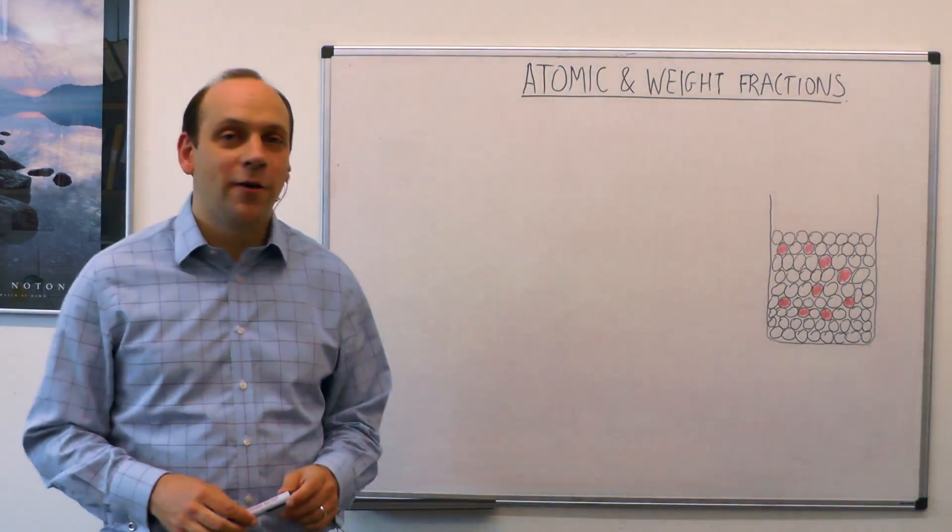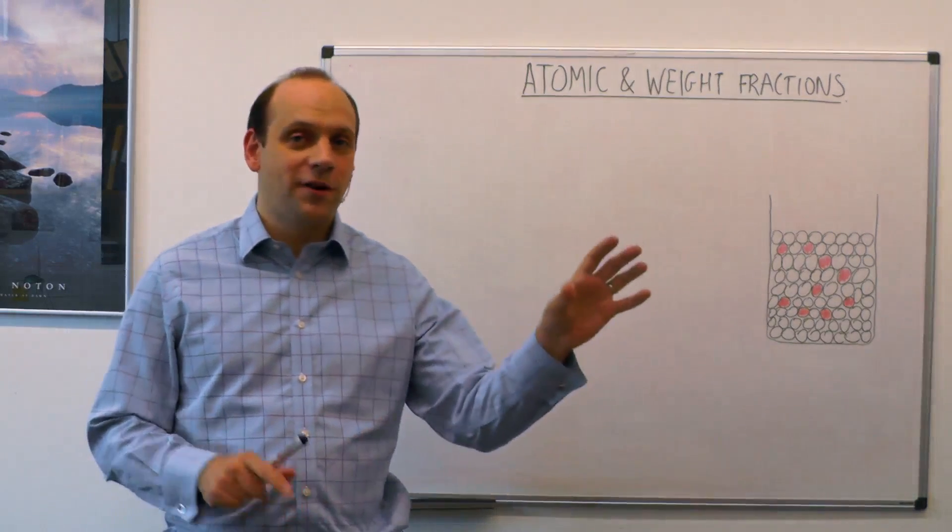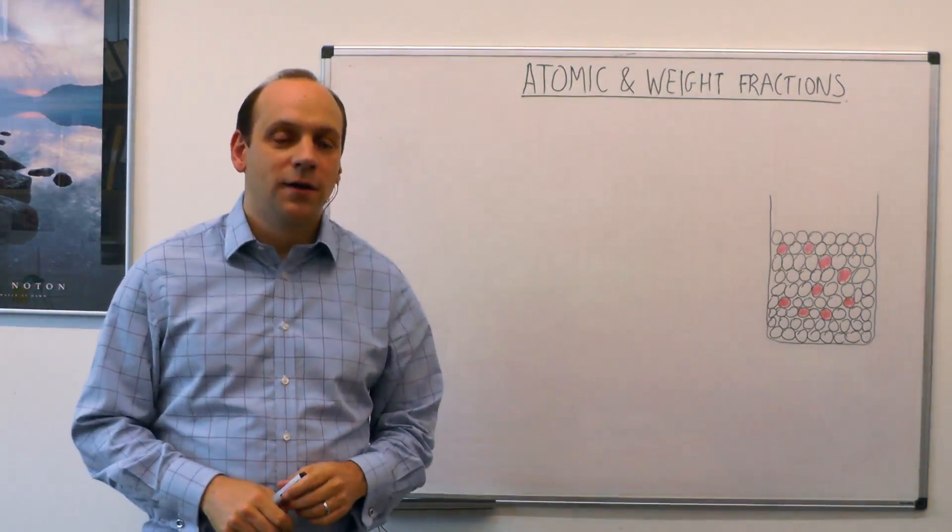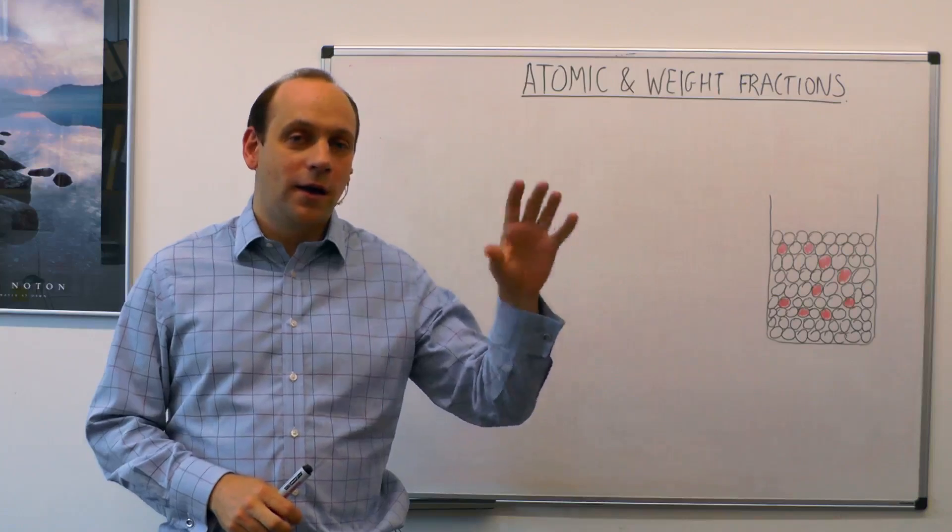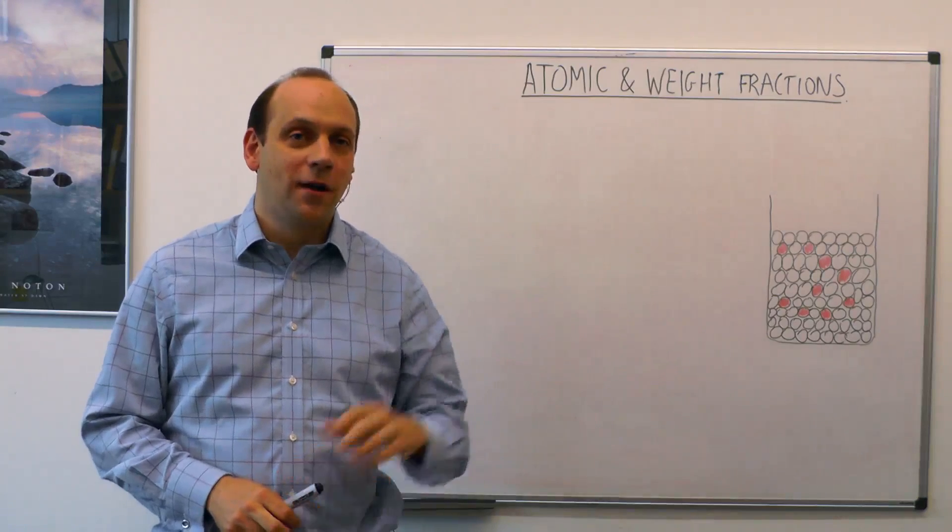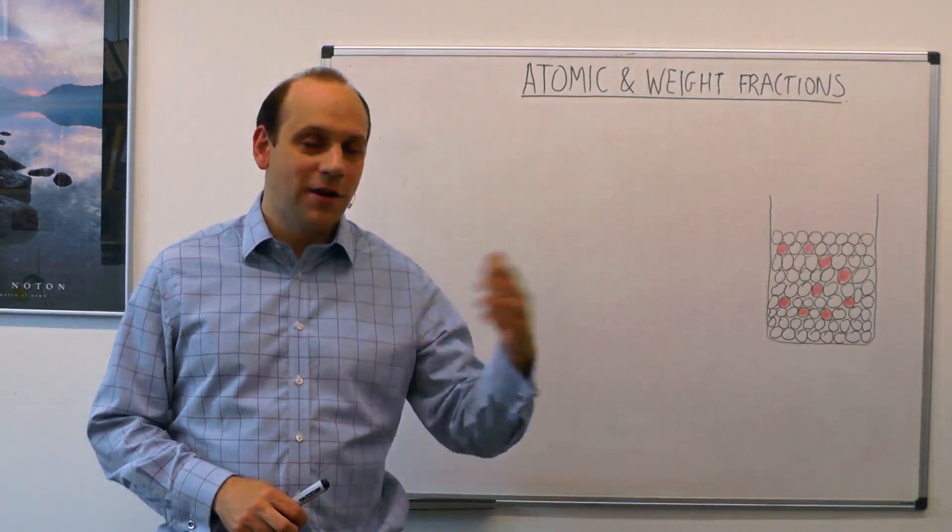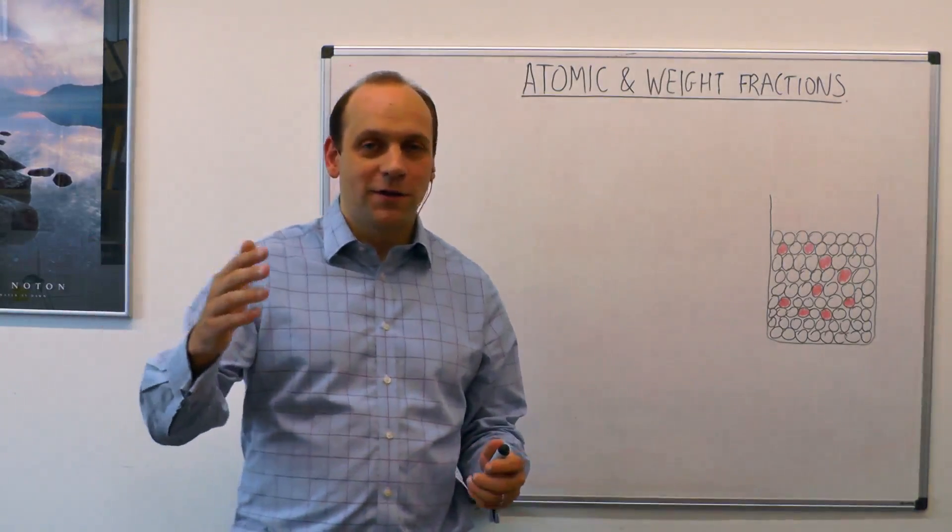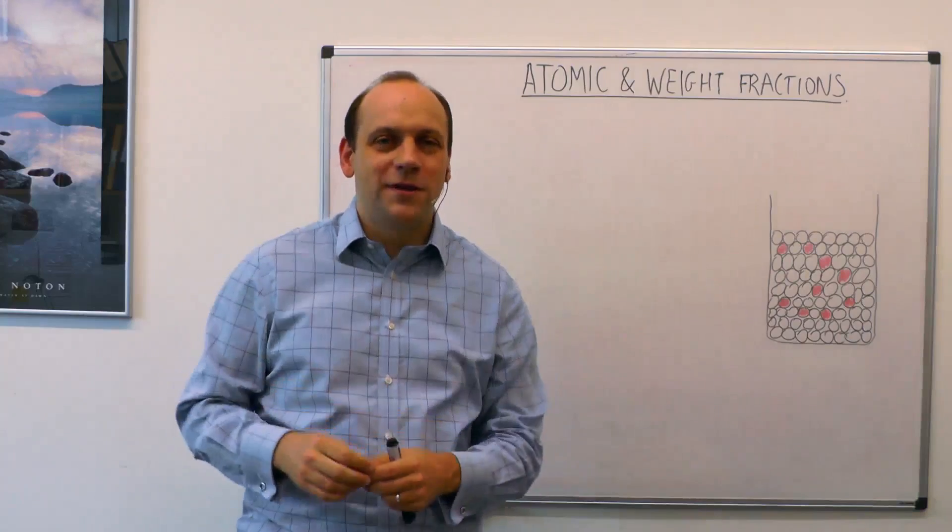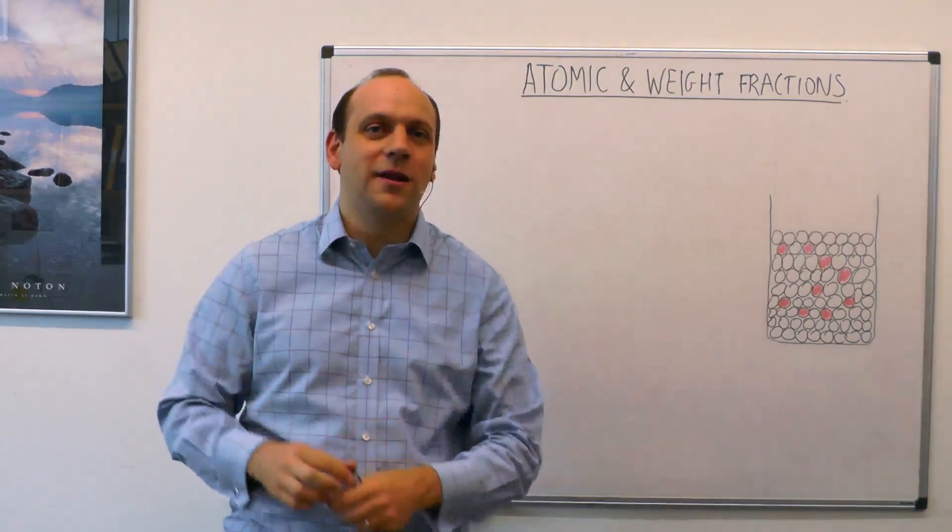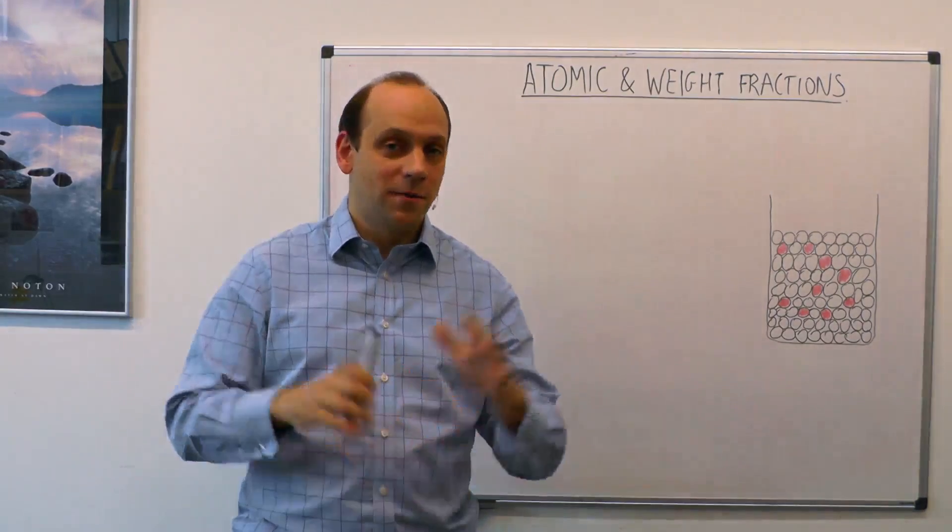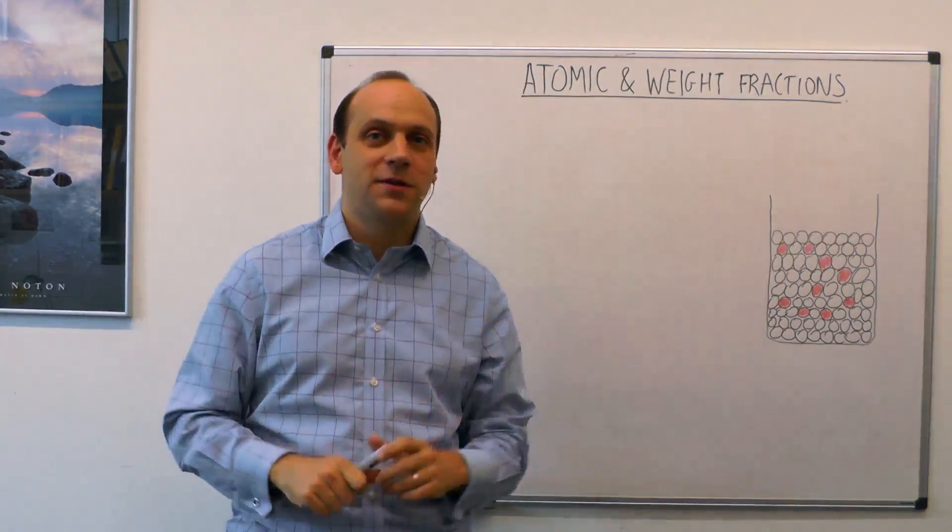This segment is about how we convert between the weight fraction and the atom fraction of different elements within an alloy. Alloys are usually specified in terms of weight fraction, how much of each alloying element there is by weight. Other times we want to know about the atoms. The physics happens with the number of atoms in an alloy, and quite often those can be two quite different numbers. So it's important to know how to convert between the two.